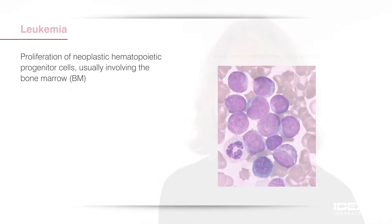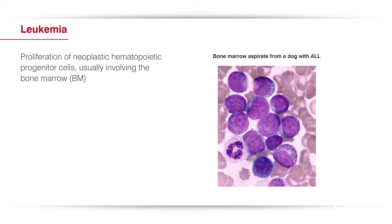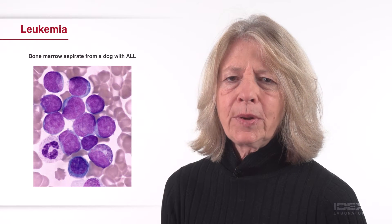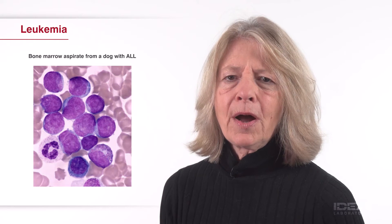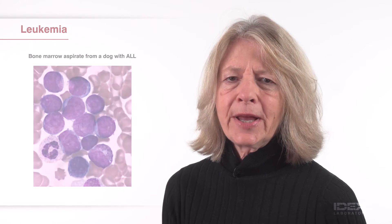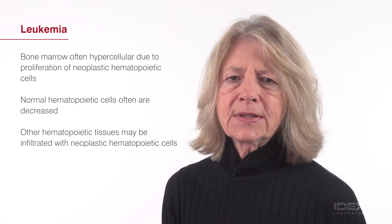Leukemia often is defined as the proliferation of neoplastic hematopoietic cells in the bone marrow, which typically results in circulating neoplastic hematopoietic cells. Most commonly, the number of circulating neoplastic cells is greater than 5 times 10 to the 9th per liter. The bone marrow often is hypercellular due to proliferation of neoplastic cells. Normal hematopoietic cells often are decreased.